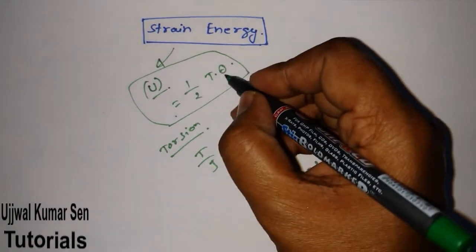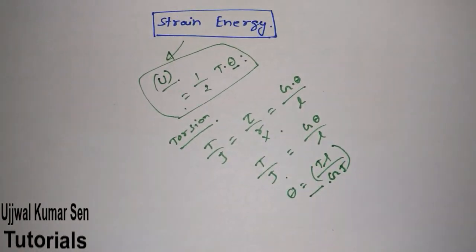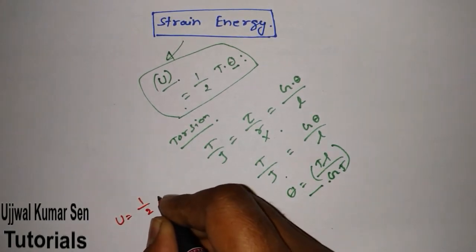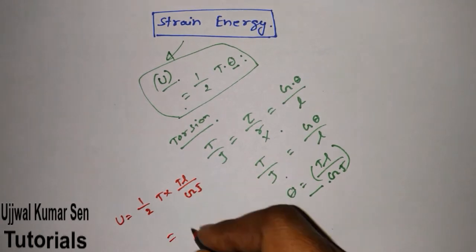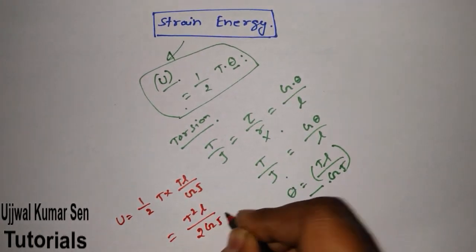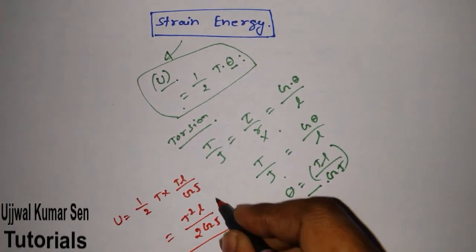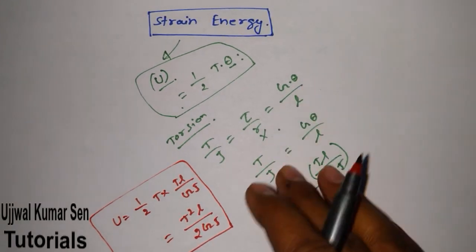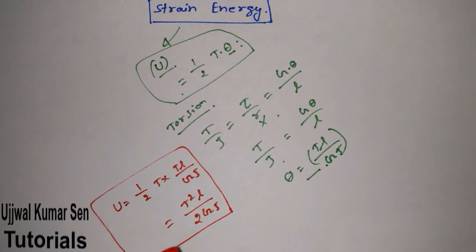If we substitute this value of theta into the basic formula U = ½Tθ, we get U = ½ × T × (TL/GJ), which simplifies to U = T²L / 2GJ. This is the key formula for finding out strain energy in torsion.